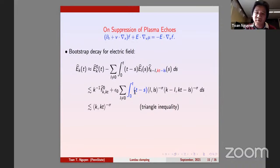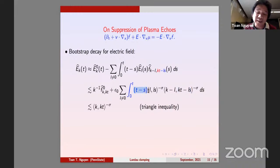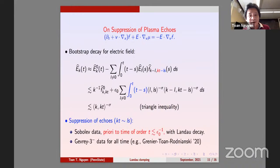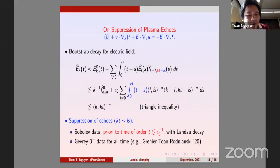But the only problematic case is when k(t minus s) is small, which means t minus s is of order t, and the integral of kt minus ls is still integrable. You lose only one factor of t — effectively epsilon times t — so for Sobolev f you can propagate Landau damping up to time of order one over epsilon zero. As long as epsilon zero times t is small you can close the nonlinear bootstrap. This is in the spirit of Mouhot-Villani and Bedrossian-Masmoudi-Mouhot.